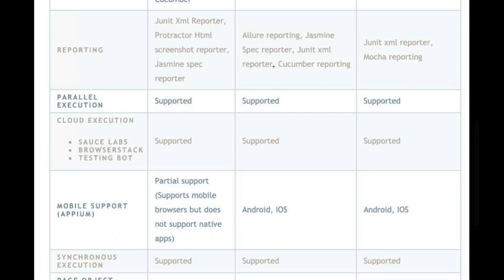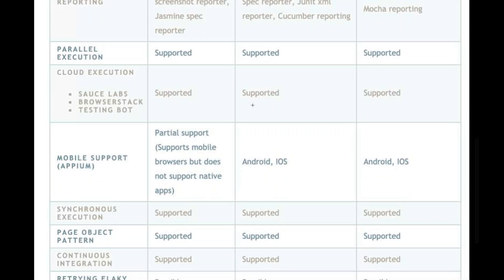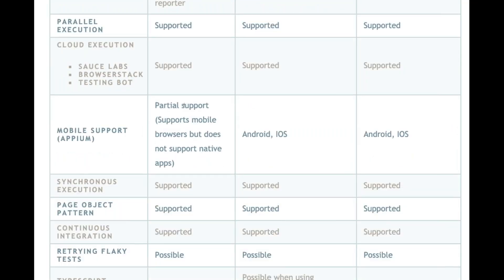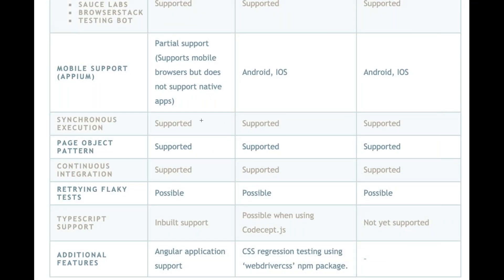Parallel execution is supported by all three tools. For cloud execution, you can easily integrate with Sauce Labs, BrowserStack, and TestingBot without any problem — all major cloud execution platforms are supported. Mobile support: Protractor has partial support — it supports mobile browsers but does not support native apps. WebDriver.io has a great advantage here: it can be easily integrated with Appium and can automate both Android and iOS native apps. Nightwatch is the same. Synchronous execution: no race condition handling needed — simple and supported by all three tools.